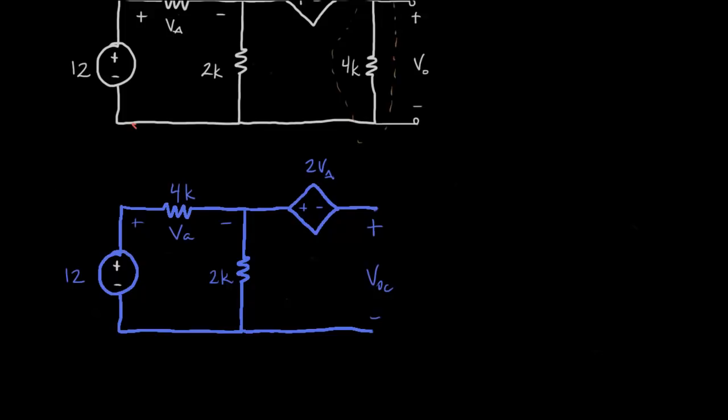So there's no avoiding in this case solving for VA first, because VOC is directly tied to VA. So we'll have to remind ourselves of the things that we know about these open branches in a circuit. This has a voltage, but it does not have a current, because it's not in a loop.